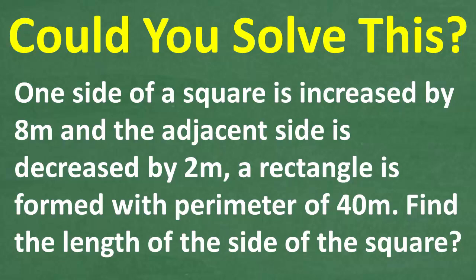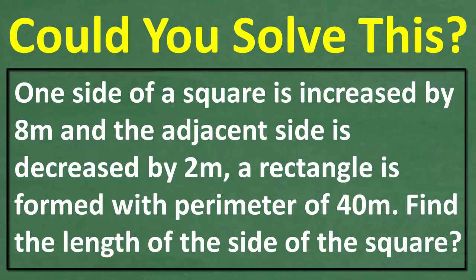Get ready to put your math skills to work to solve this interesting little math word problem. Let me go ahead and read the problem. One side of a square is increased by 8 meters, and the adjacent side is decreased by 2 meters. The result is a rectangle is formed whose perimeter is 40 meters. So what we want to do here is find the length of the square.